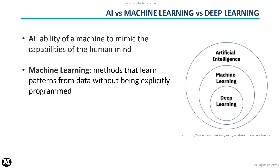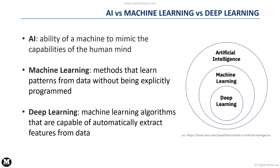Machine learning represents a set of AI methods that learn patterns from data without being explicitly programmed. We will see later some applications of machine learning. With deep learning, we consider machine learning algorithms that can automatically extract features from data — an operation that with other machine learning methods requires human intervention.